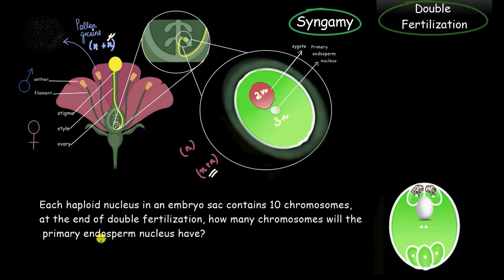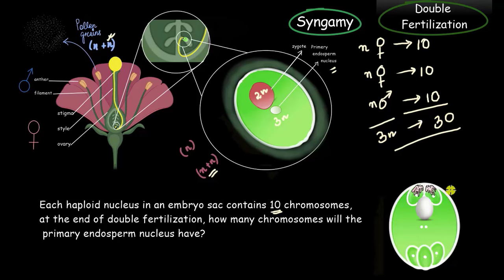Alright, so the question is asking about the number of chromosomes in the primary endosperm nucleus and we know that it is formed by the fusion of three nuclei, of which two are female and one is a male nuclei, right? And the haploid female nuclei of the embryo sac has 10 chromosomes, which is mentioned in the question. So, every female nuclei will have 10 chromosomes each and what will be the number of chromosomes of the male nucleus? Well, the male gamete or the male nucleus here also comes from the same species, right? Therefore, its haploid number of chromosomes would be same as that of the female chromosome. Therefore, it will also have 10 chromosomes in its haploid nucleus. So, here is the answer. The primary endosperm nucleus, which has three haploid nuclei, will have a total of 30 chromosomes.